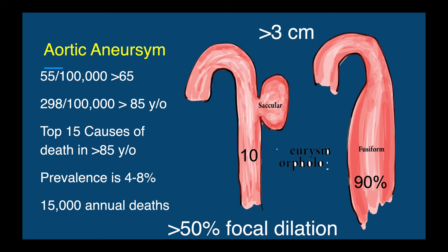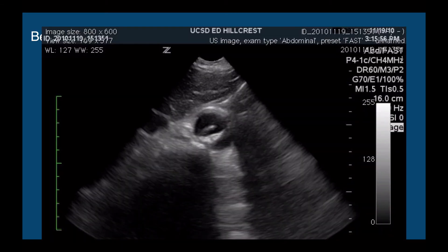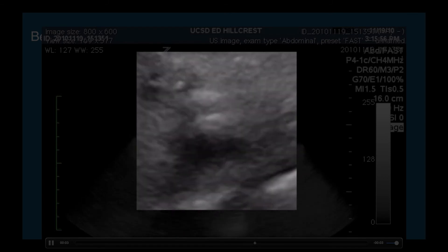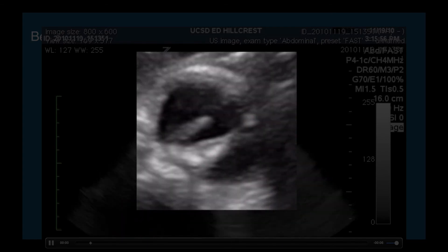Aortic aneurysm accounts for 15,000 annual deaths in the United States per year. Dissections are also very mortality-causing and even more difficult to diagnose. On x-ray, we might see apical capping, tracheal deviation to the right, or a loss of the paratracheal stripe, but oftentimes we don't see anything specific. So we always try to look with ultrasound when we suspect dissection — sometimes we may just see a flap in the aorta, and then we use color flow to check for turbulence or a false lumen.